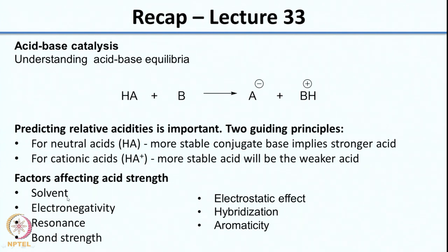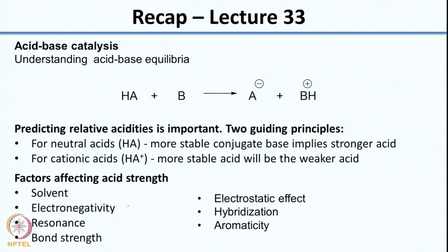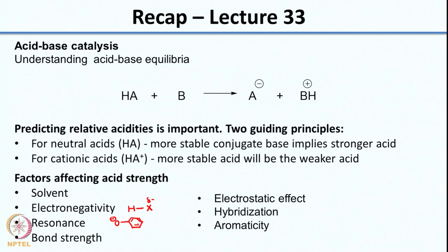We had looked at factors which affect acid strength. We looked at solvent - a solvent which solvates the ion more. In the case of a neutral acid, if the ion is more solvated, that means you have a better acid. Whereas for a charged acid, if the acid is more solvated, it would be a weaker acid. Then we looked at electronegativity: greater the electronegativity of X in HX, better would be the acidity. Then we looked at resonance - if a conjugate base can be stabilized by resonance, you see an improvement in acidity.